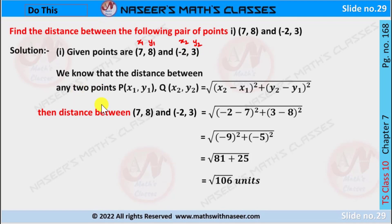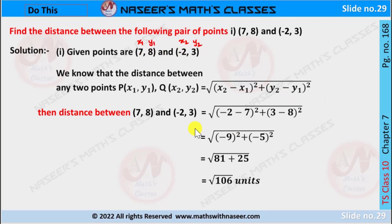The distance between any two points P(x1, y1) and Q(x2, y2) is written as the square root of (x2 minus x1) all squared plus (y2 minus y1) all squared. Now we substitute the x1, y1 and x2, y2 values. We can write it as the square root of (minus 2 minus 7) all squared plus (3 minus 8) all squared.